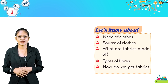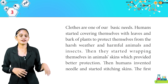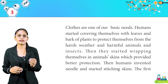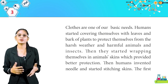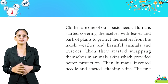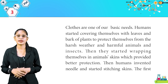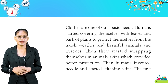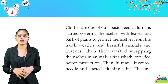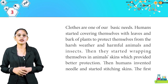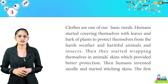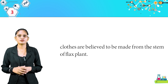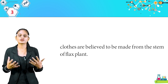These are the topics we will discuss in this chapter. Clothes are one of our basic needs. Humans started covering themselves with leaves and bark of plants to protect themselves from harsh weather and harmful animals and insects. Then they started wrapping themselves in animal skin, which provided better protection. Humans then invented the needle and started stitching skins. The first clothes are believed to be made from the stem of flax plants.